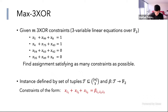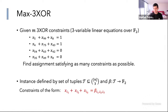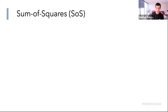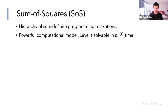We can think of an instance as being specified by a collection of three-tuples T, which form the left-hand side of all the equations, and a function beta from this collection T to F2, which forms the right-hand side of all these equations. The optimization algorithm we will consider is the sum of squares hierarchy, which is actually a family of algorithms. It gives semidefinite programming relaxations for combinatorial and even continuous optimization problems.